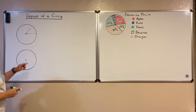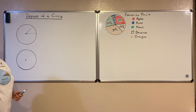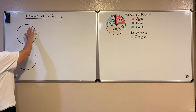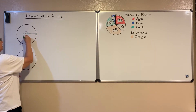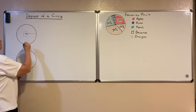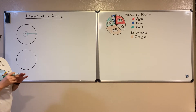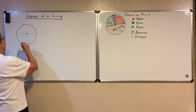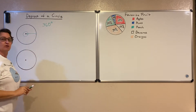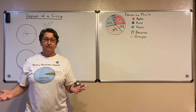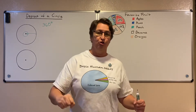Inside here we call that an angle, and this particularly is the central angle because it's from the center of the circle. Now in a circle, if I go all the way around, we call that the central angle and it's 360 degrees all the way around. So that angle there is 360 degrees. If you ever hear someone do a 360 trick on their skateboard or bicycle, it means they spun all the way around.